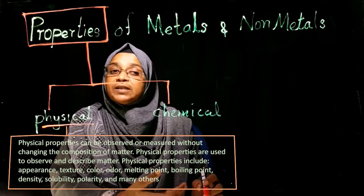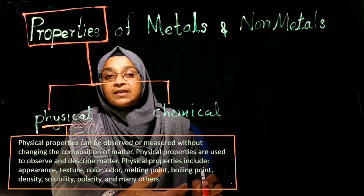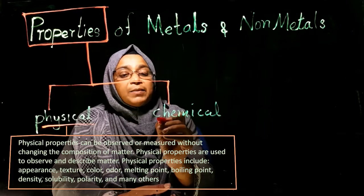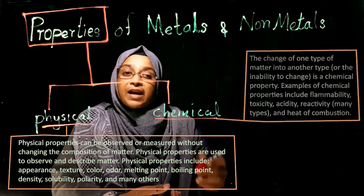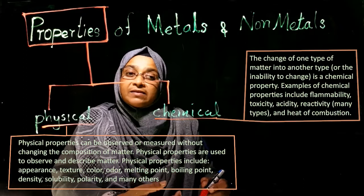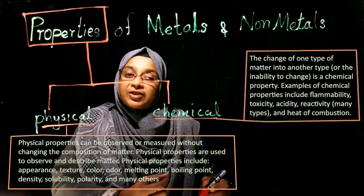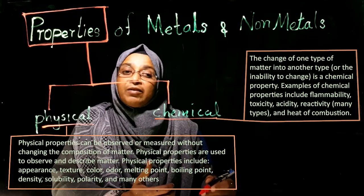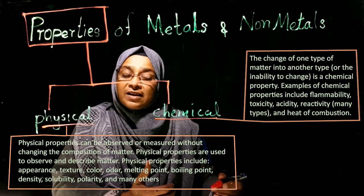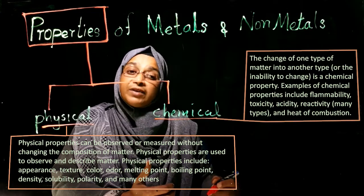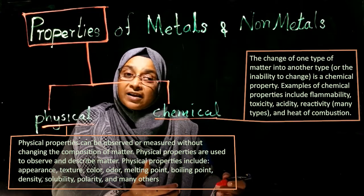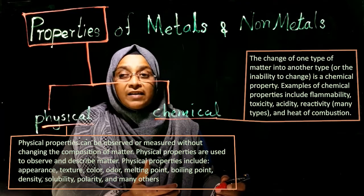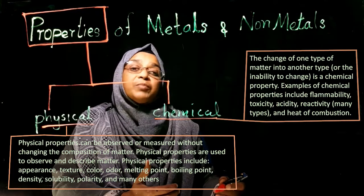Chemical properties can be observed when a substance reacts in a chemical reaction. A new substance forms, the composition of the substance changes, electronic configurations change, and electron exchange takes place. Only then can we observe the chemical properties.